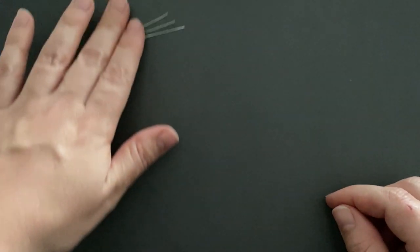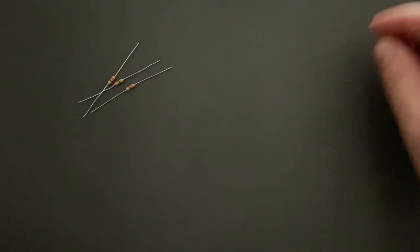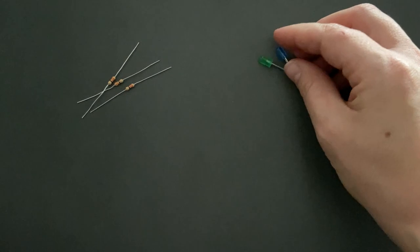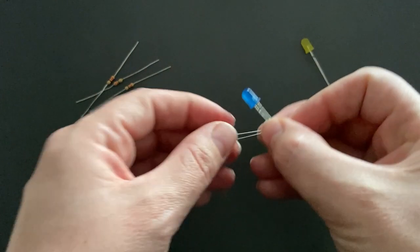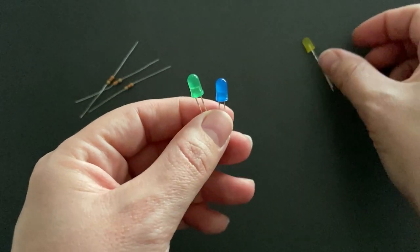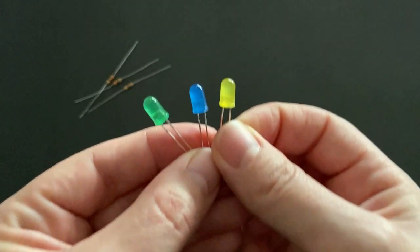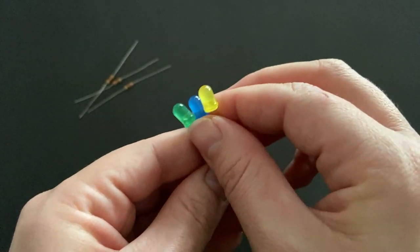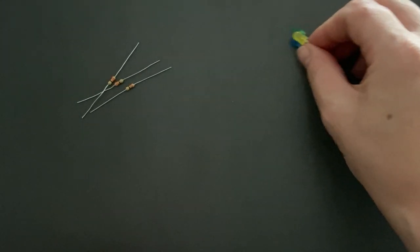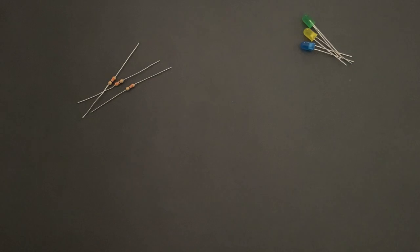Before we start, let's get familiar with our tools and materials. For this build, you'll need 3 resistors and 3 LEDs. LEDs are a particular type of diode that convert electrical energy into light. In fact, LED stands for Light Emitting Diode. LEDs are like tiny light bulbs, but they require a lot less power to light up and they're also more energy efficient, so they don't tend to get hot like conventional light bulbs do.